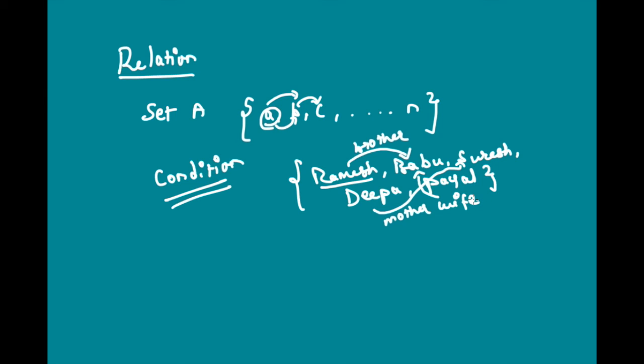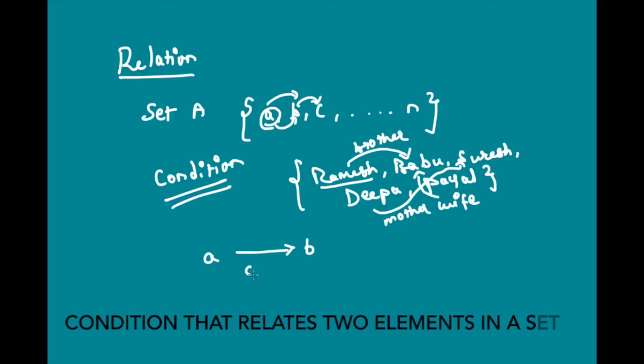So, we can have any such relationship in a given set. Typically what we are trying to do in a relation is we are trying to connect two elements, establish some relationship between two elements with a condition. And this is more relevant in mathematics.